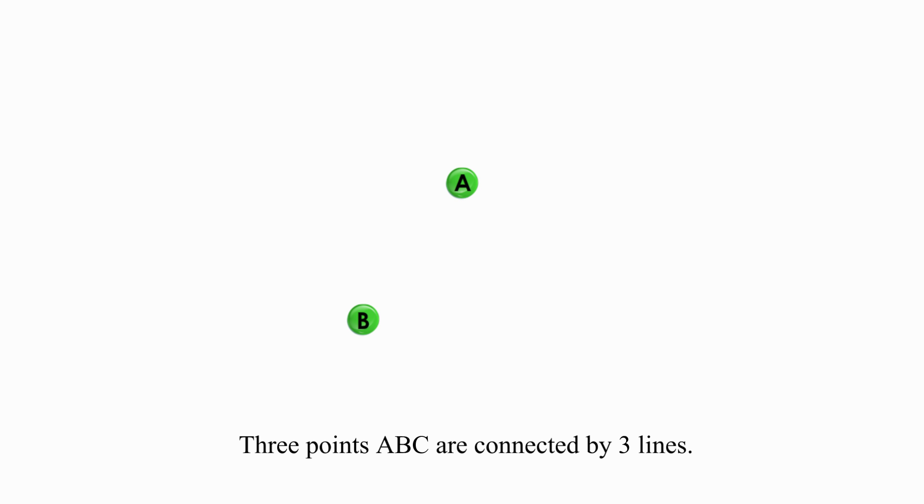Let's use this example. Three points ABC are connected by three lines. Every two points is connected, we get a complete graph.